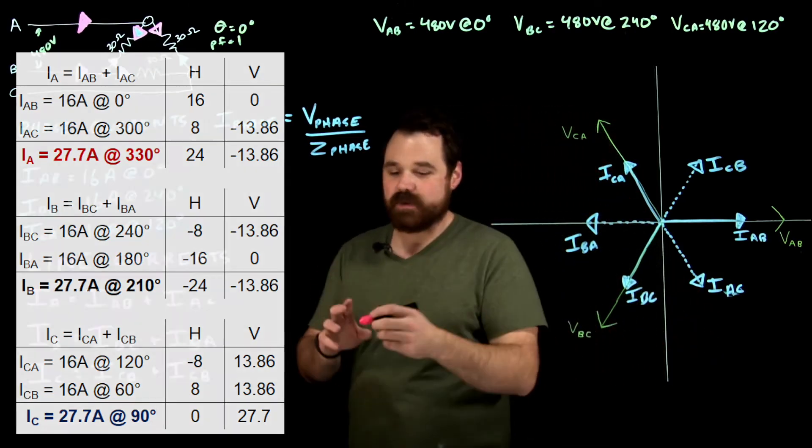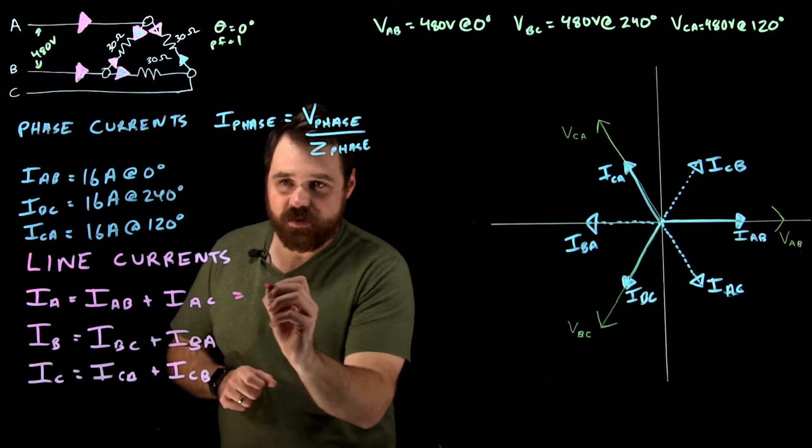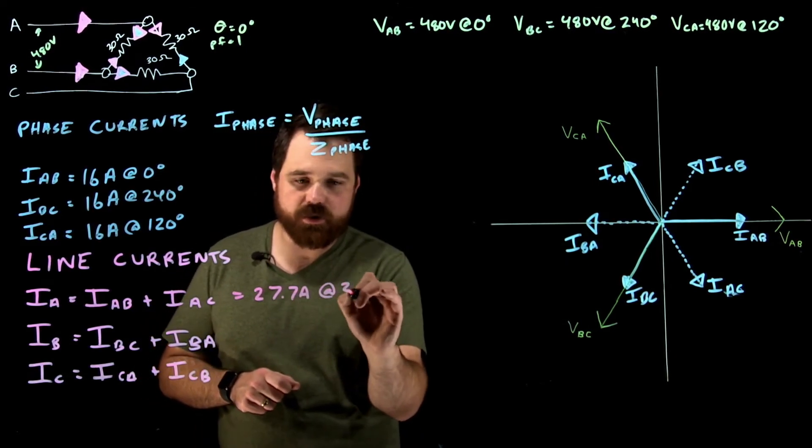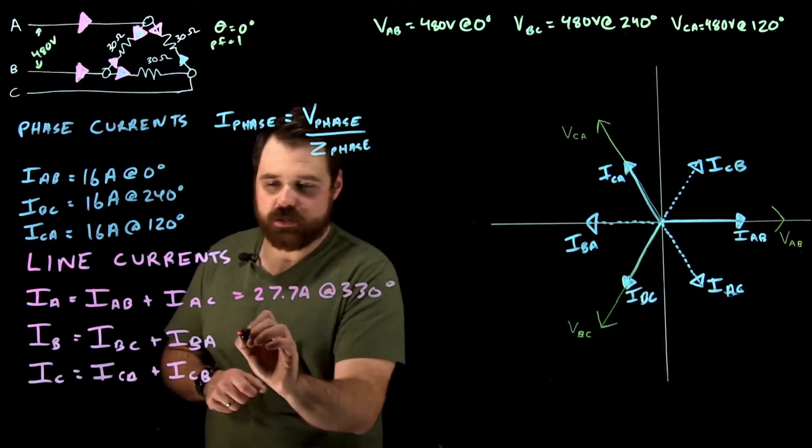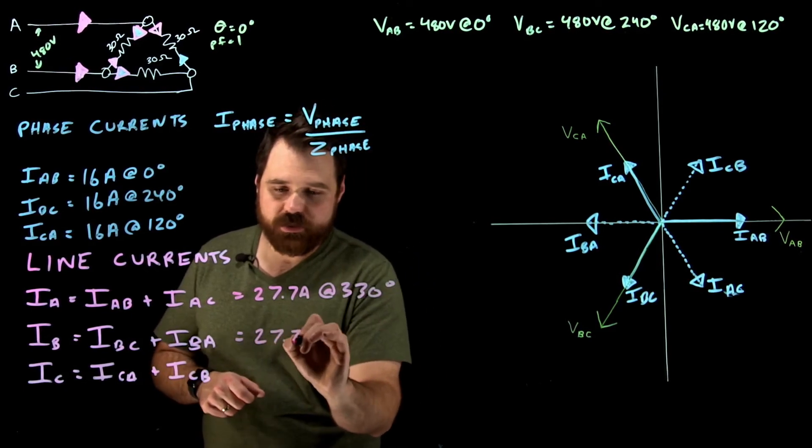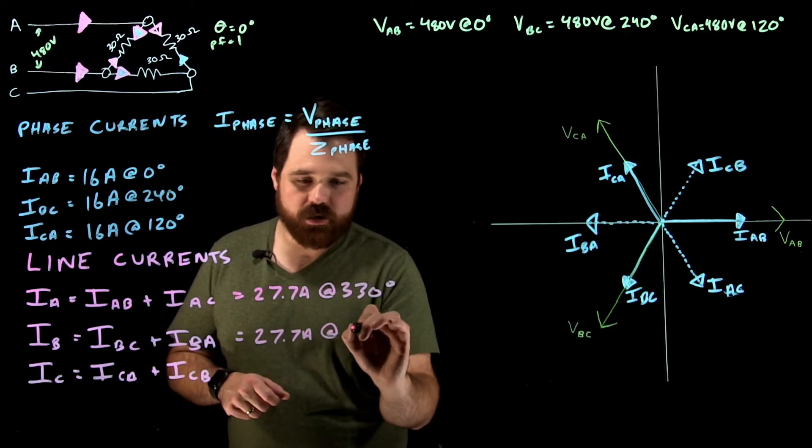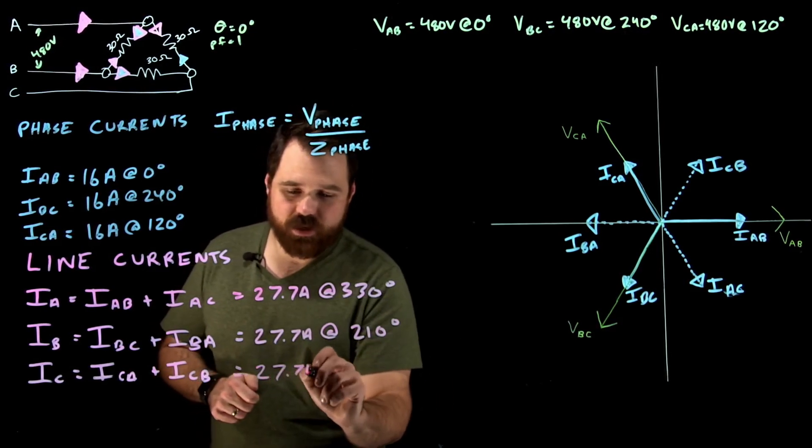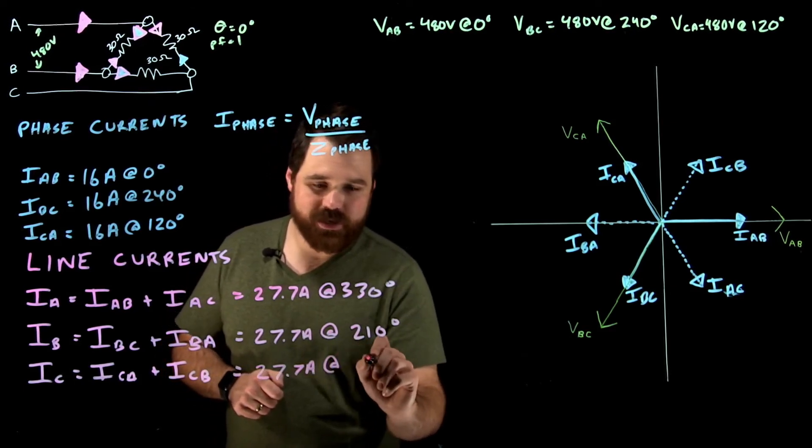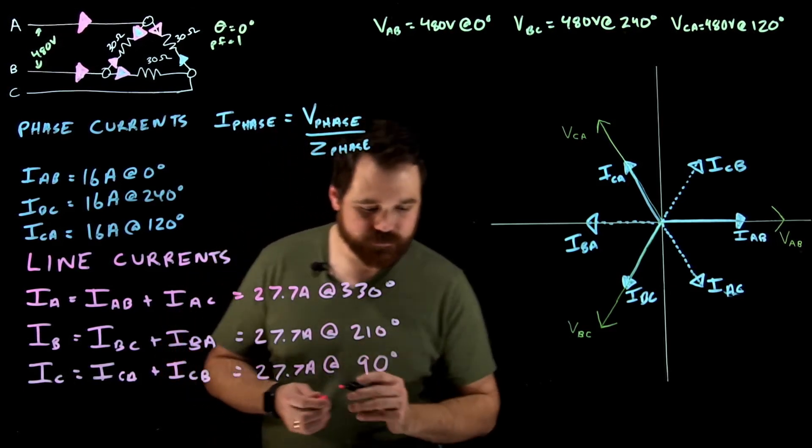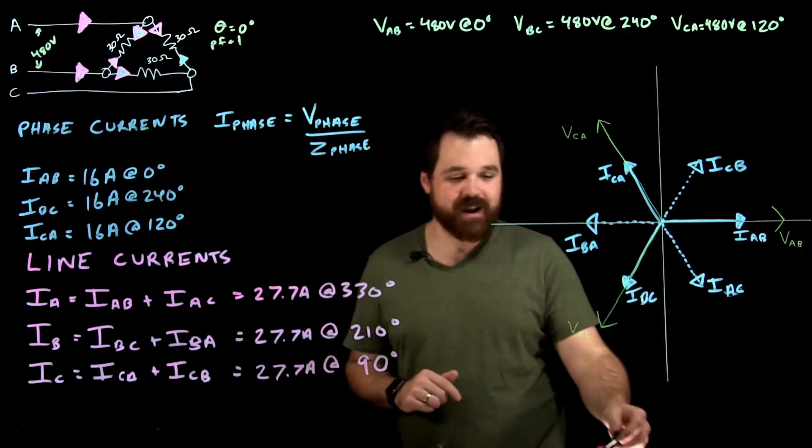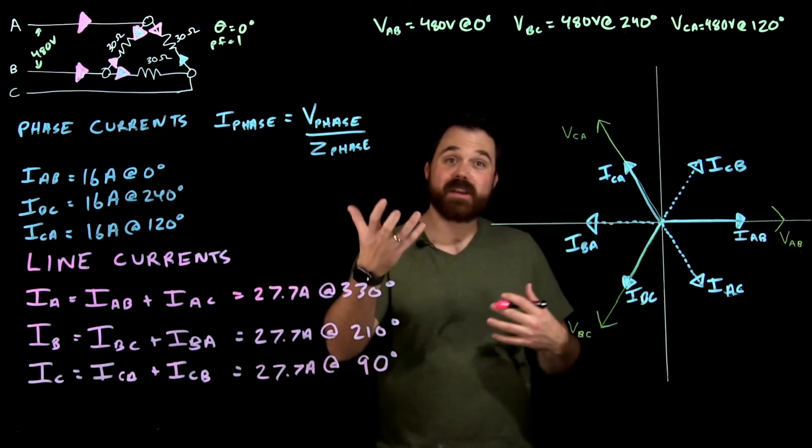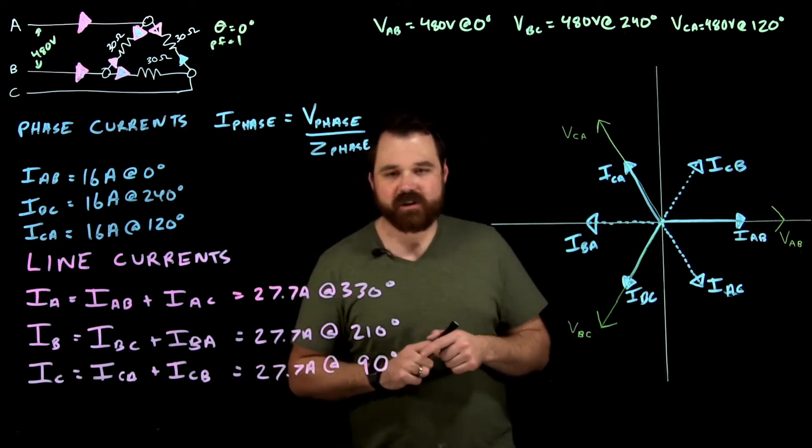That's what we see here. We got 27.7 amps at 330 degrees, 27.7 amps at 210 degrees, and 27.7 amps at 90 degrees. Now we see some patterns here, and this is going to lead to some very important rules that we can apply to all balanced circuits.